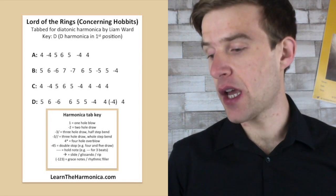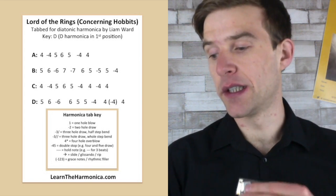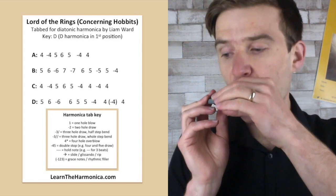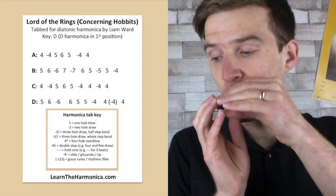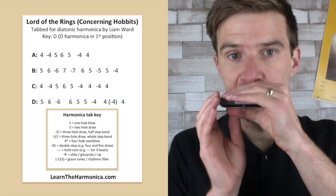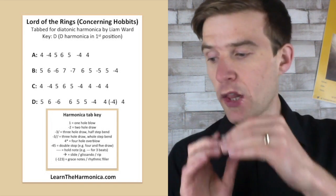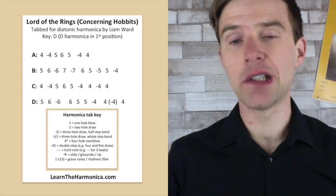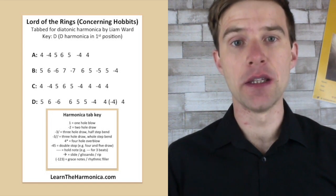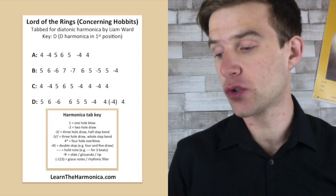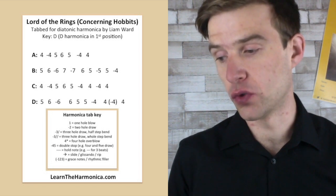Line C is, well, we're almost back to line A, but it goes something like this. So it's basically line A with a little bit added in the middle. So we've got four blow, four draw, five blow, six blow, five blow, four draw, just as we have on line A.